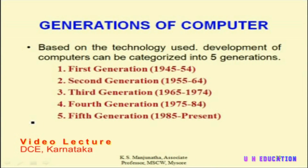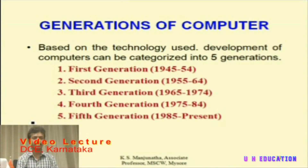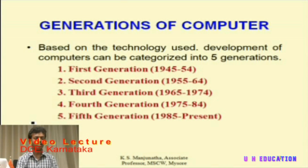The development in the field of computer science can be classified into five distinct generations. Each generation is an improvement over the previous one, resulting in new hardware, new memory devices, and new storage devices. Each generation roughly spans about ten years. The first generation spans 1945 to 1954; the second generation, 1955 to 1964; the third generation, 1965 to 1974; the fourth generation, 1975 to 1984; and the fifth generation started in 1985 and continues to the present. The basic difference among all these generations is what principal component was used in constructing the computer.